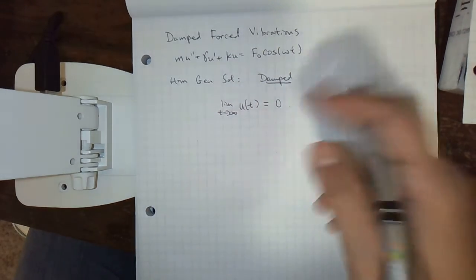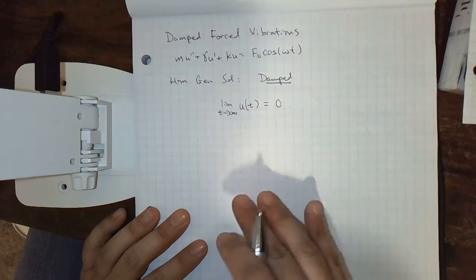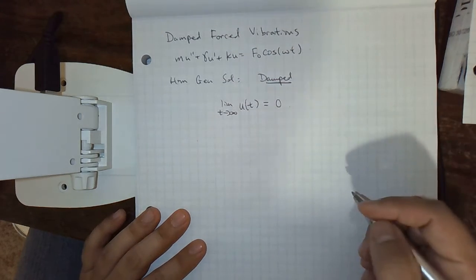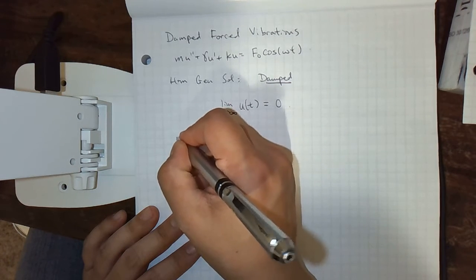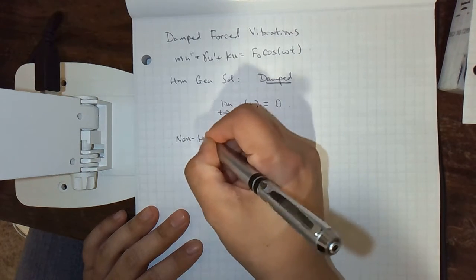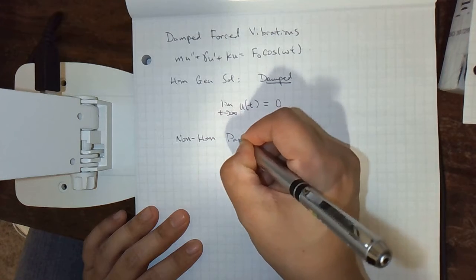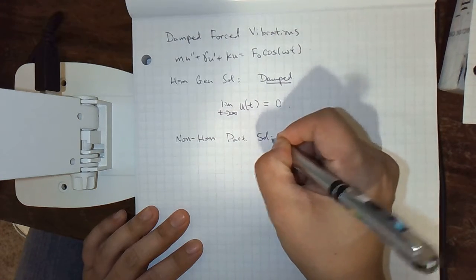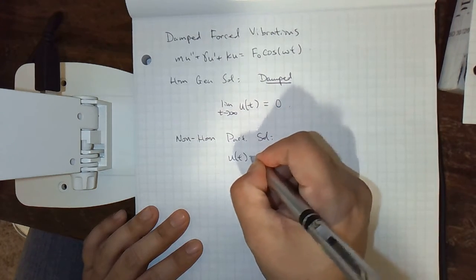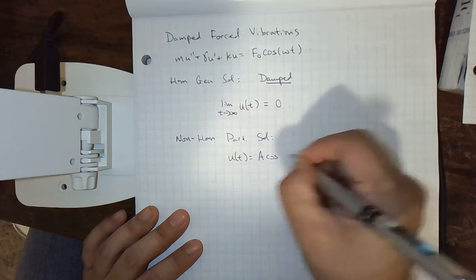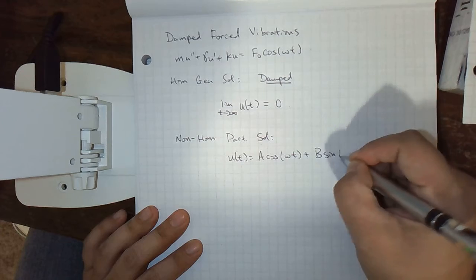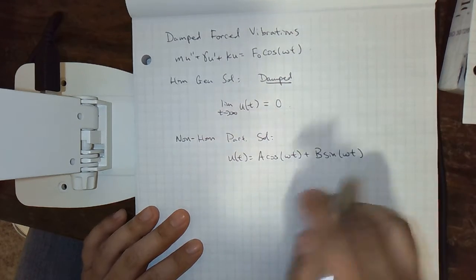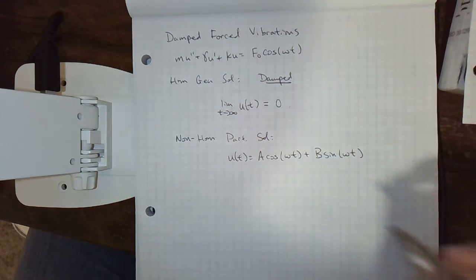That's what damped generally means qualitatively. So we're going to find a particular solution to the non-homogeneous case. That's going to have the form a cosine omega t plus b sine omega t. And we'll be able to calculate a and b by plugging it back into the original differential equation.